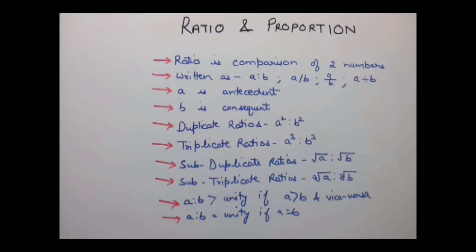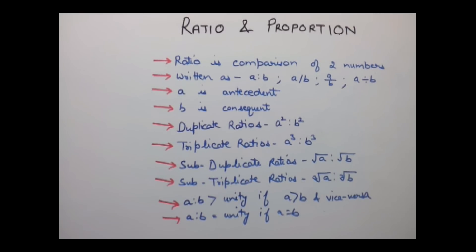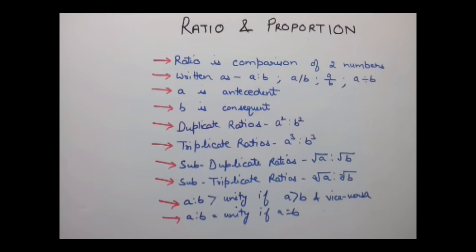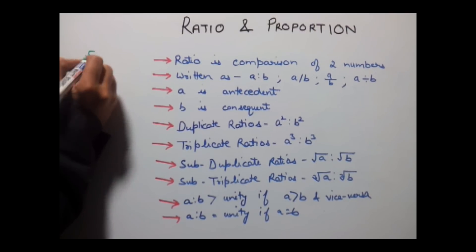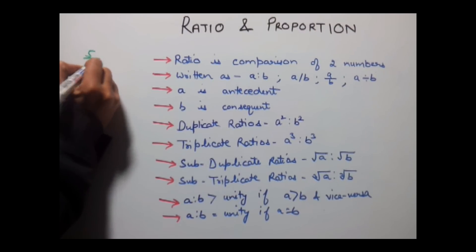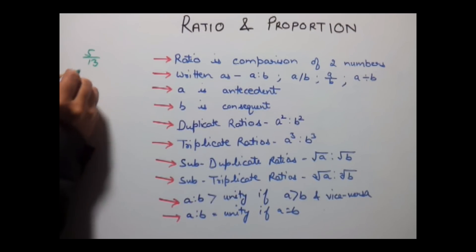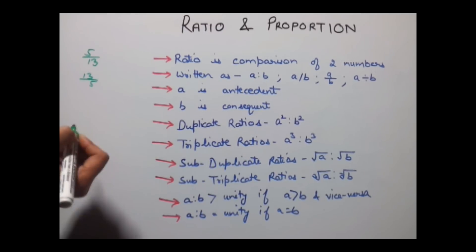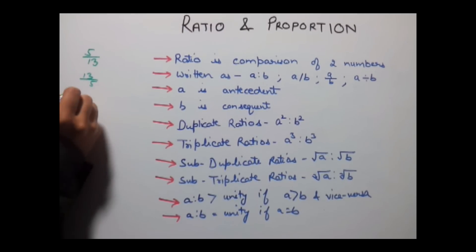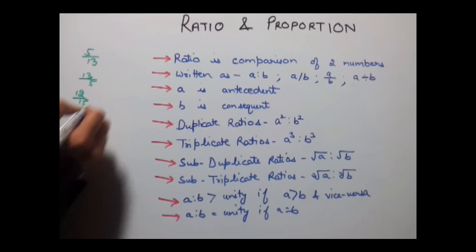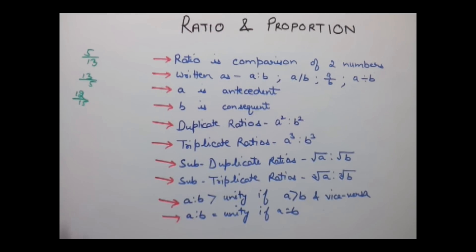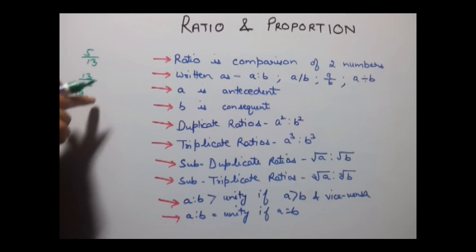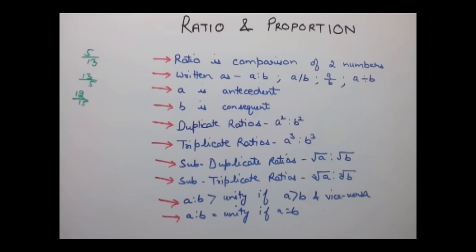First, understand what is a Ratio. Ratio is a comparison of two numbers. Those numbers can be anything — for example, 5 upon 13 is a ratio, 13 upon 5 is also a ratio, and 12 upon 15 is also a ratio. So a ratio is a comparison of two numbers.